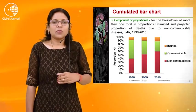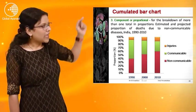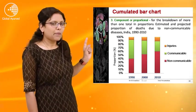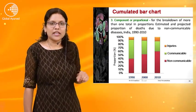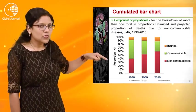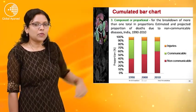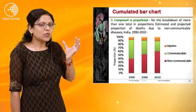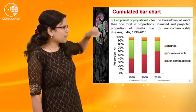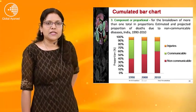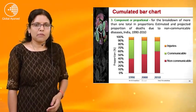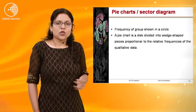The accumulated bar chart is also called a proportional bar diagram. It is used for the breakdown of more than one total in proportions. For example, for the years 1919, 2000, and 2010, the causes of death — injuries, communicable disease, and non-communicable disease — are shown as proportions within a single bar. That is called the proportional or cumulative bar chart.